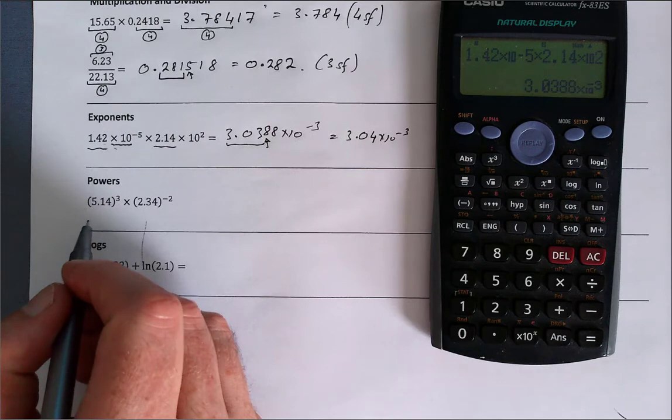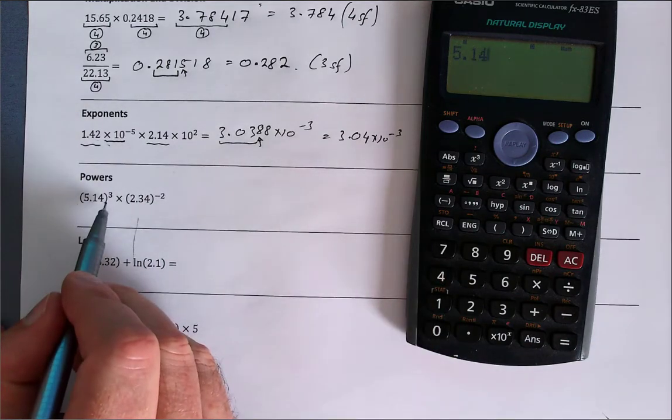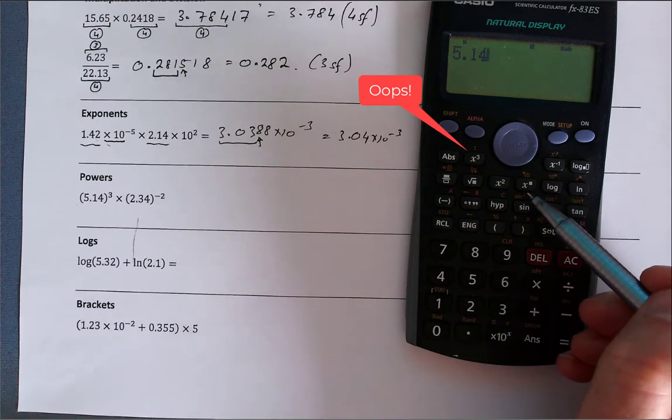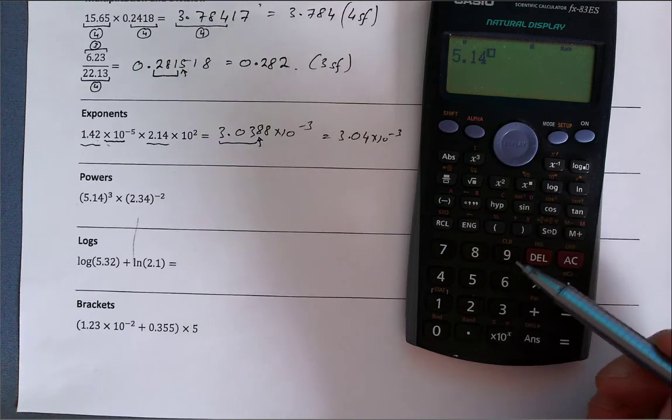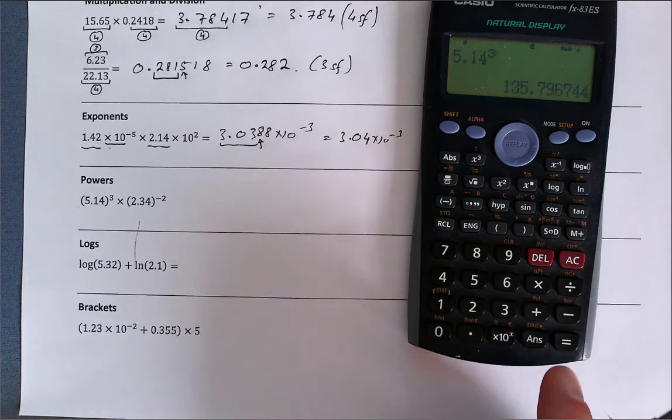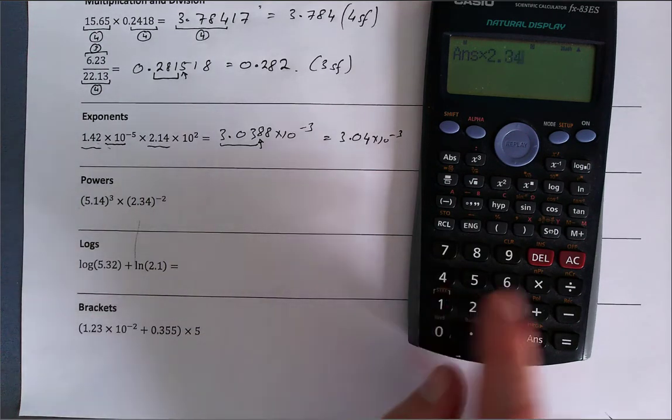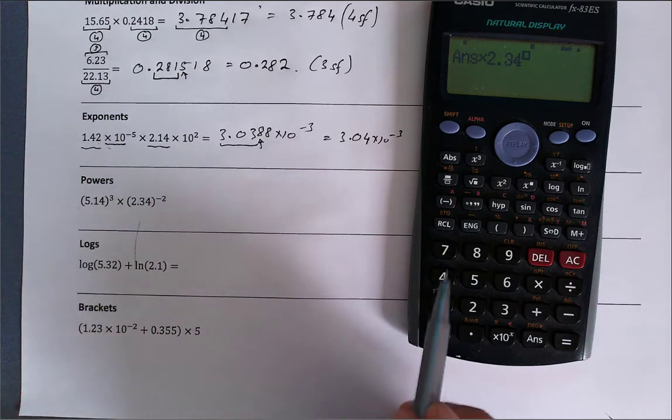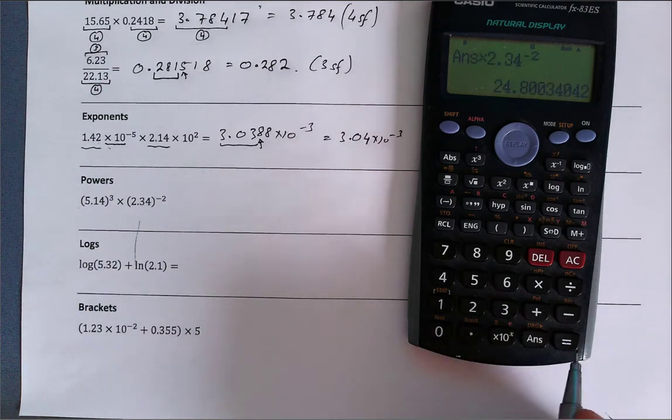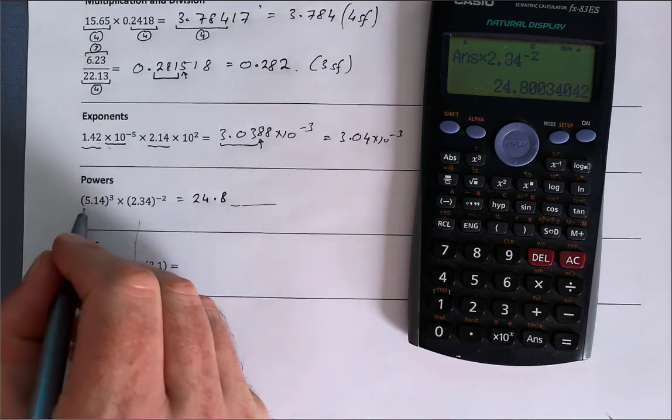Powers. Now we can see where we have something raised to some power. I've got 5.14 raised to the power of 3. Now sometimes there's an x cubed on calculators. This one doesn't have an x cubed, just has an x to the power of blank. So I'm going to click that x to the power of blank and type in the power I want: 3. I'll press equals, and then multiply by the second one: 2.34. Again, x to the power of, I use the minus here because it's an exponent, 2, equals. And that gives me 24.8 and lots of other numbers, but I can see here I'm limited to three significant figures.